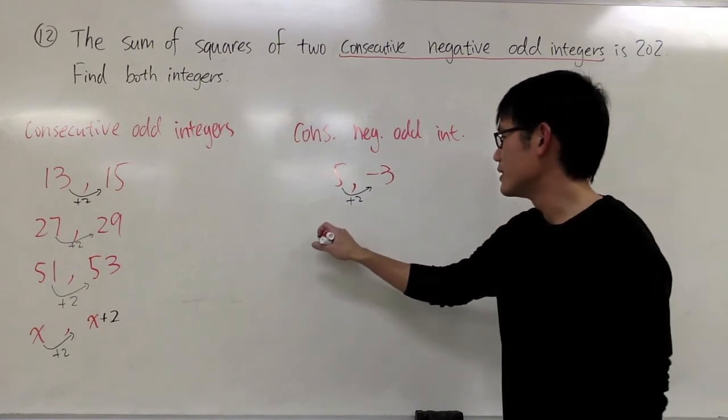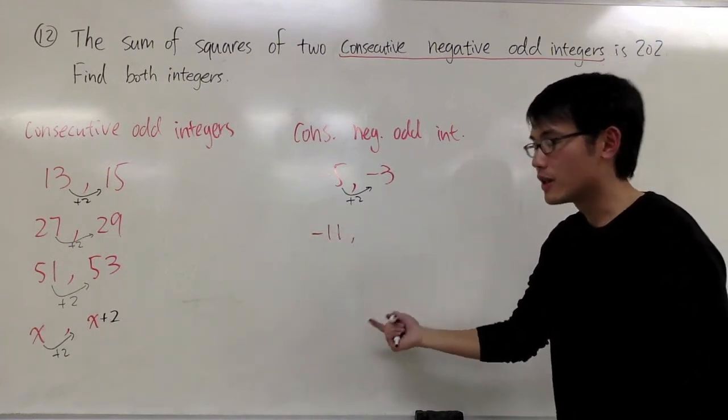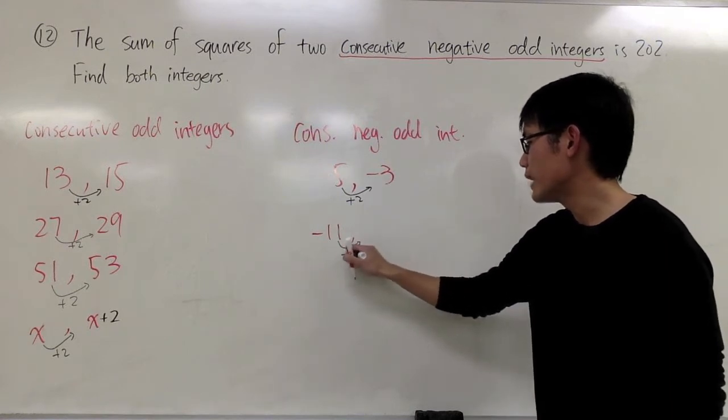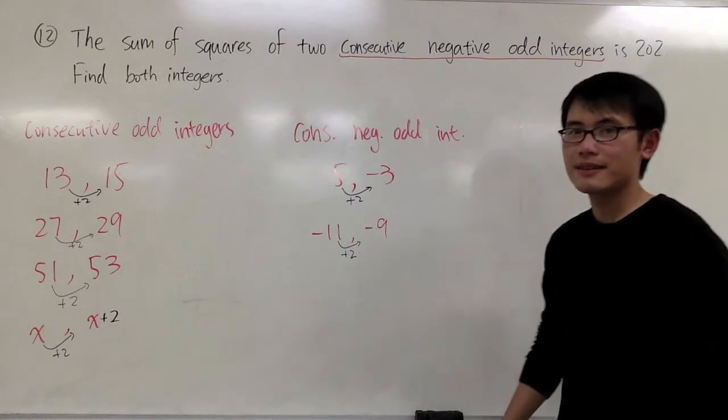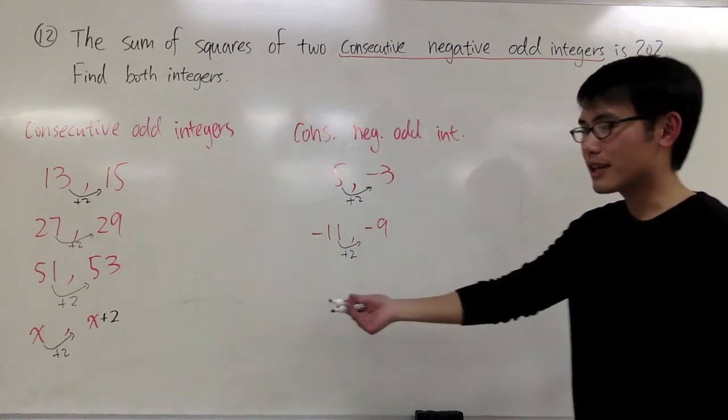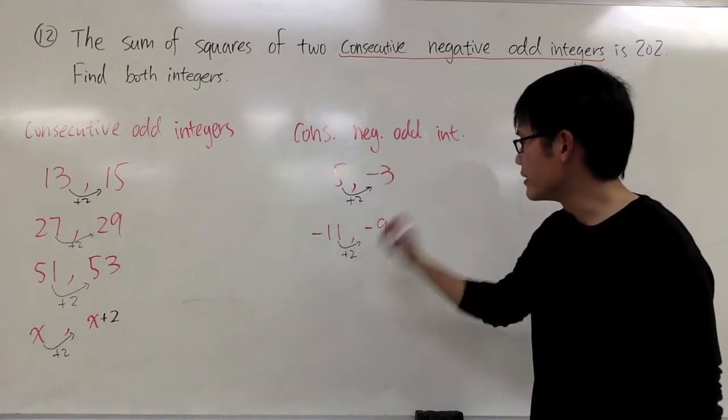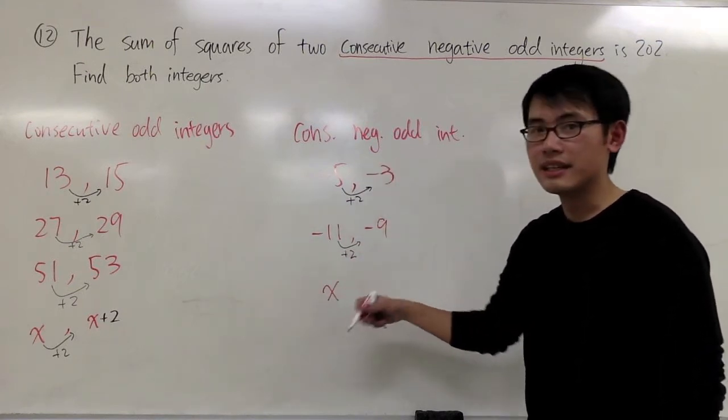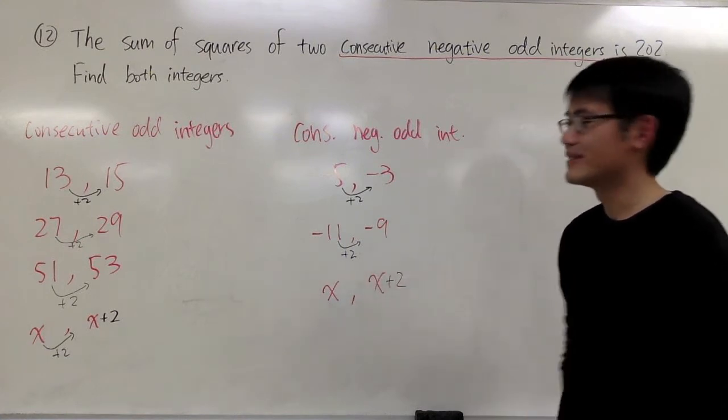And if I start with, let's say, negative 11, the next odd integer, which is going to be, once again, I just need to add 2 to it, will be negative 9. So the formula, it's actually the same. If I ever start with my first negative odd integer as x, then the next one will be x plus 2.